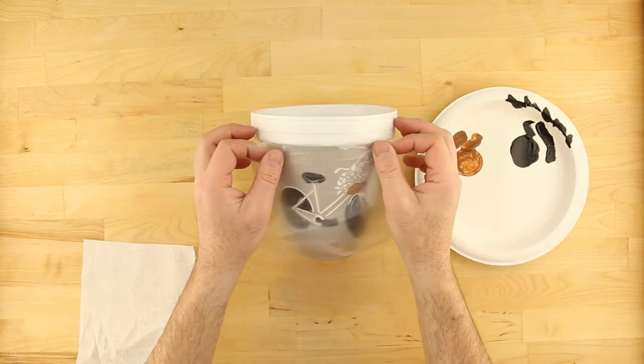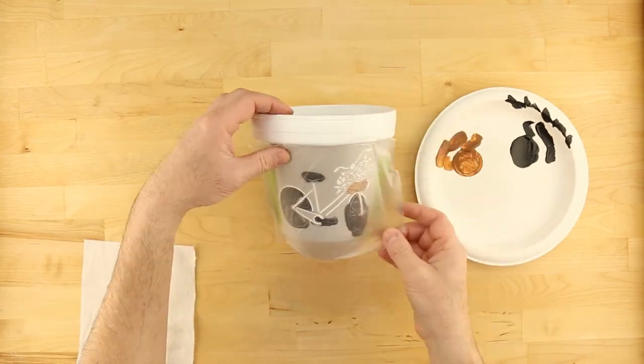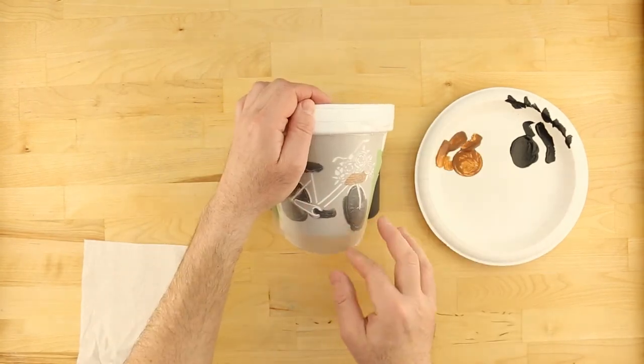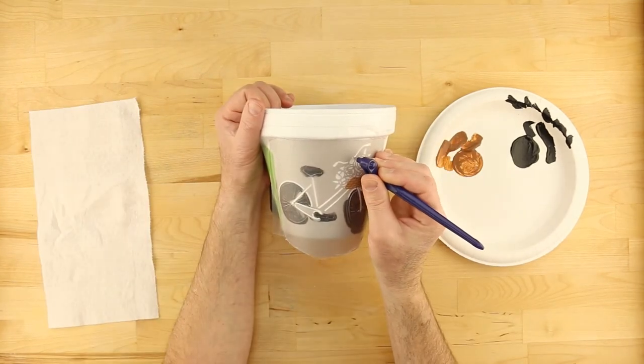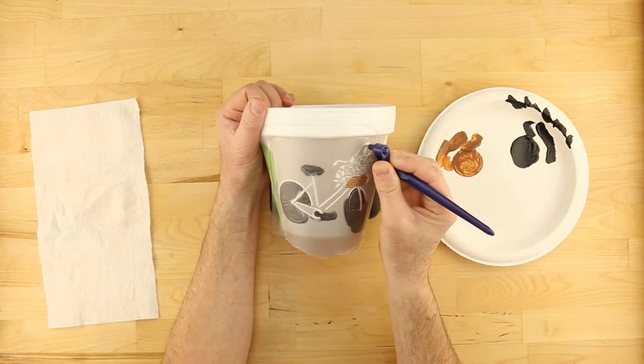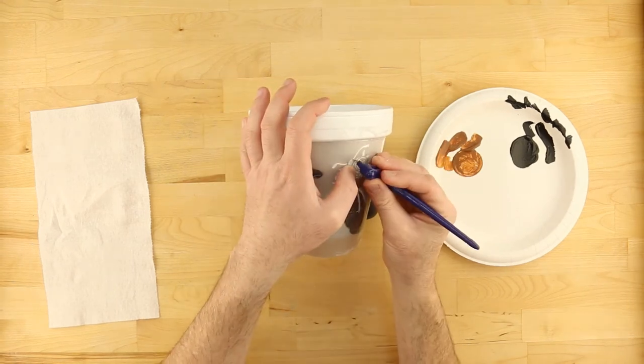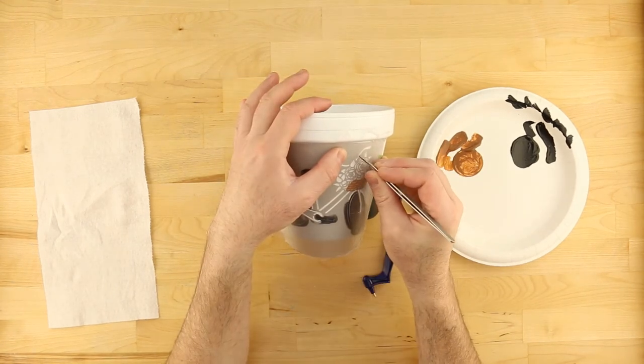Remove and reapply Glad Press and Seal as needed to isolate other stencil elements. Repeat the trimming and removal process using the Gyrocut Tool. Tweezers work great to remove smaller sections of the Press and Seal.